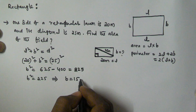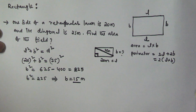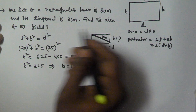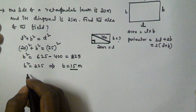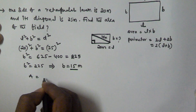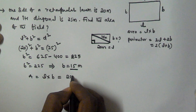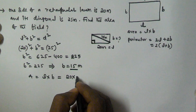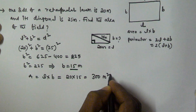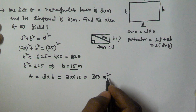B is 15, so the breadth is 15 meters. The length is 20 meters and the breadth is 15 meters. Now we have to find the area of the field. The area of the rectangle is length into breadth. Length is 20 and breadth is 15, so 20 into 15 equals 300 meters square. The area of the rectangular lawn is 300 meters square.